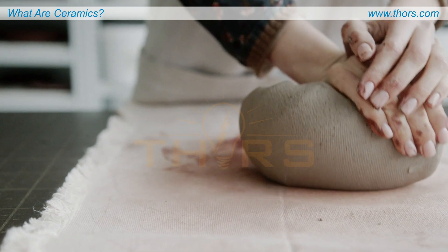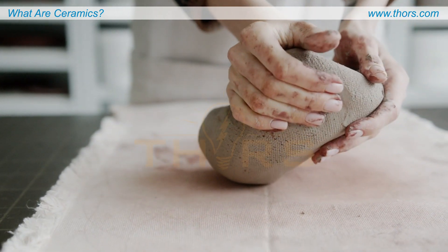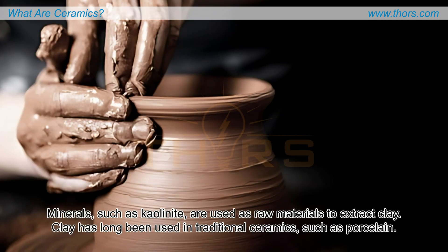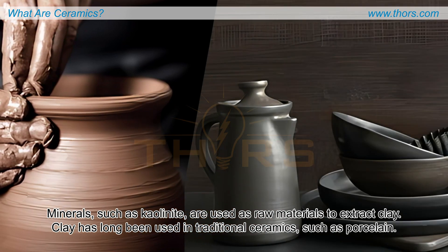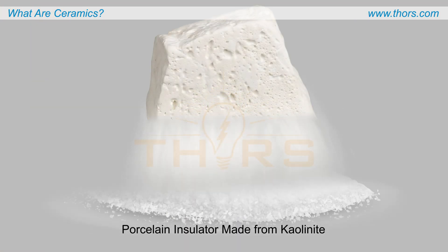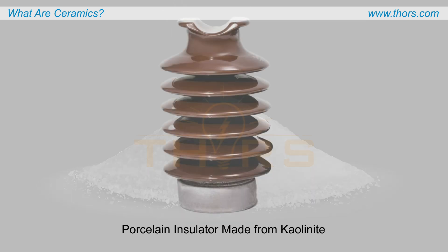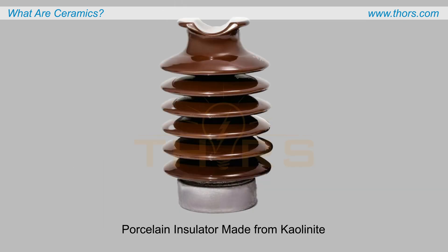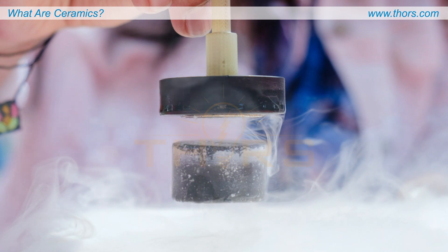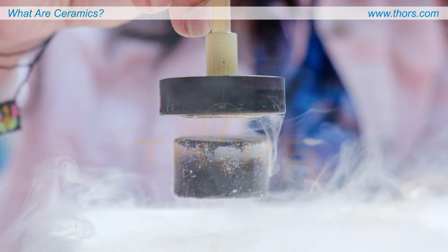One of the first materials used to produce ceramics was clay. Minerals such as kaolinite are used as raw materials to extract clay, which has long been used in traditional ceramics such as porcelain. Porcelain made from kaolinite is frequently used as an electrical insulator, while some ceramic compounds such as yttrium-barium-copper oxide are superconductors.